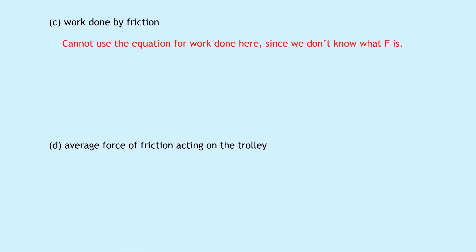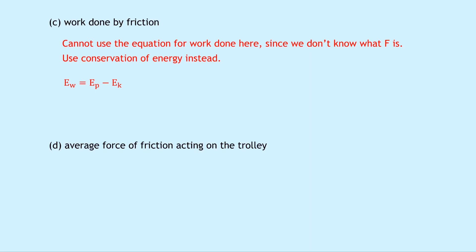Part C asks us to find the work done by friction. We cannot use the standard work done equation since we don't know the force f. Instead, we use conservation of energy: the work done by friction equals the gravitational potential energy minus the kinetic energy. That difference represents the energy lost to friction. So this equals 14.7 minus 3.4, which gives 11.3 joules.